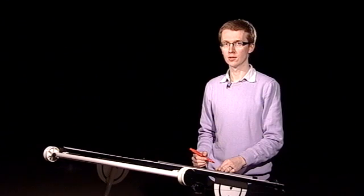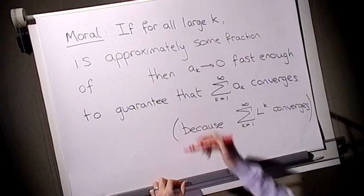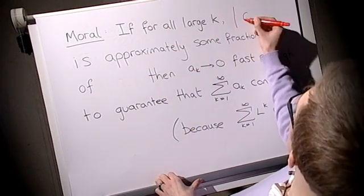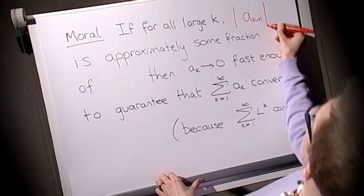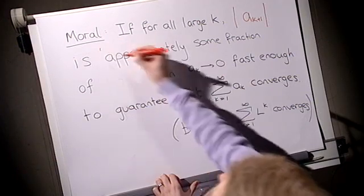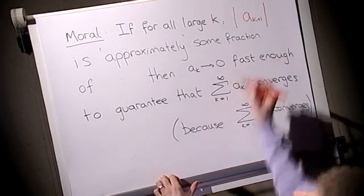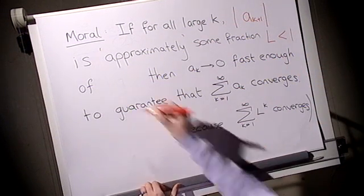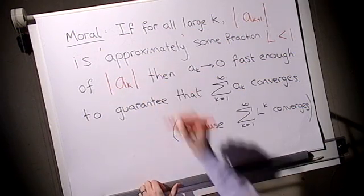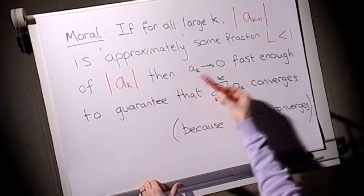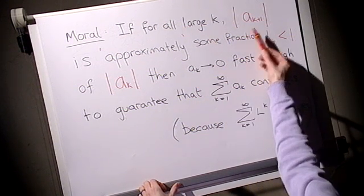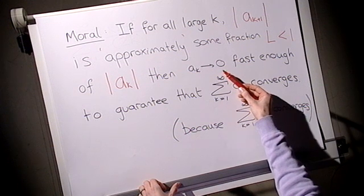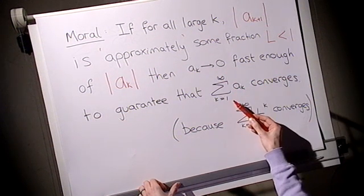So let's translate this test now into English. So here's a moral. If for each large k, what we need to be true is that the modulus of the k plus first term is approximately some fraction, let's call it l, and hope it's less than one, of the previous term, the modulus of a_k, then what's going to be true? So we've got a_{k+1}, the modulus of a_{k+1} is approximately some fraction of the a_k. And what's going to happen is that the terms of the a_k will tend to zero fast enough to guarantee that this infinite sum converges.